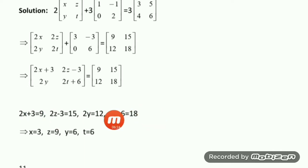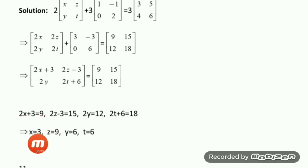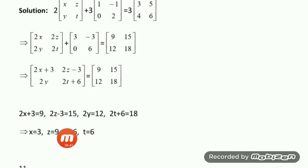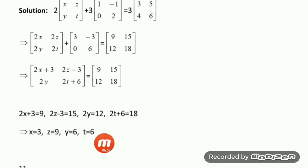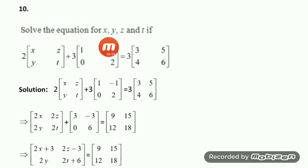Now solve the equations. 2X = 9-3 = 6, so X equals 3. Twice Z: bring 3 to the right side, 2Z = 18, so Z equals 9. Then 2Y = 12, so Y equals 6. And 2T+6 = 18, so 2T = 12, so T equals 6. This completes the solution of question number 10 — we have got the values of X, Y, Z, and T.